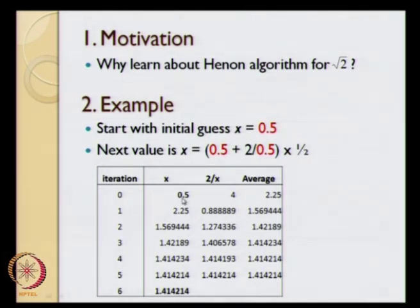We started with 0.5. The average of 0.5 and 2 by 0.5 is 2.25. We took that 2.25 as the next guess. So, the next guess after that is going to be 2.25 and 2 divided by 2.25. We take the average of these two numbers and the average happens to be 1.569. This average is going to be the value of x at the second iteration.